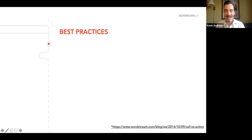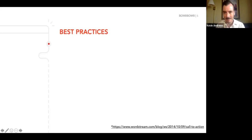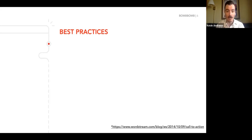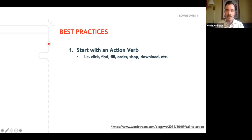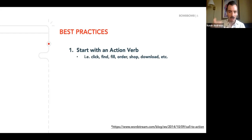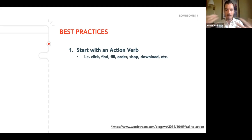Let's talk through some best practices when it comes to CTAs. When I started here four years ago, I had no idea what the best practices were. First and foremost: start with an action verb. If you're like me and terrible at grammar, basically it's what do you want them to do? What action can they take? Examples are click, find, fill, order, shop — it's an actual thing that they can do. It's a great word to start your CTAs with because it's something actionable.